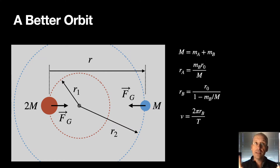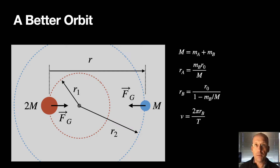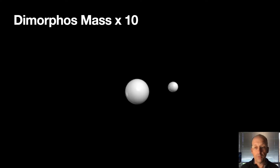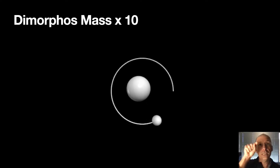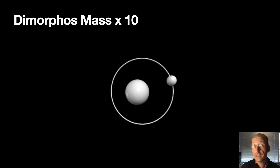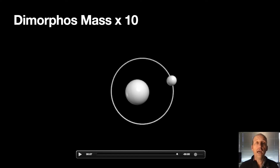So if you do that, here's what it looks like. I increased the mass of Dimorphos by a factor of 10 just so you could see what it would look like. You can see the wobble more clearly. The point of orbit is still inside Didymos, and it looks like it's not a circular orbit, but it is — both bodies are circularly orbiting about a common center of mass point. You have a nice binary asteroid model in Python.